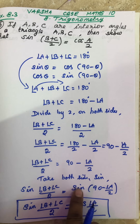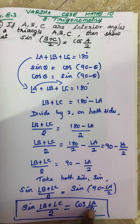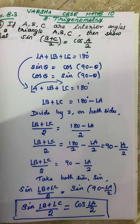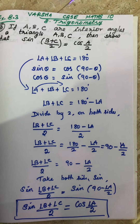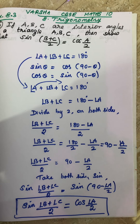sin(90° − θ) is cos θ, so you got the answer. I hope you all understand, students. Thank you.